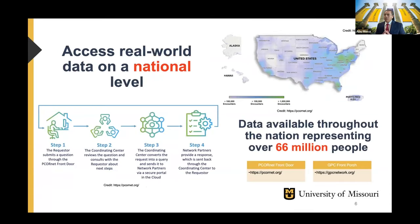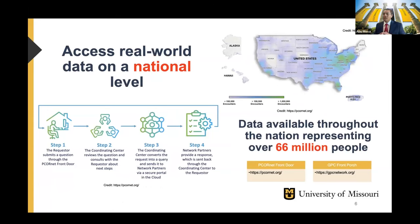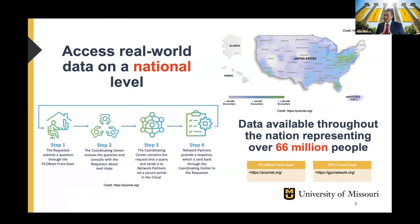Because of this funded network operation and all the network partners' commitment, we can provide access to real-world data on a national scale — over 66 million patients, and the statistics are a little old so it would be more than that — and facilitate processes for supporting a full-stake network operation. There are a lot of things needed for running a successful clinical research network.